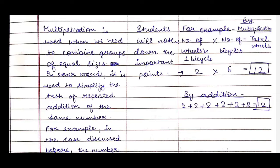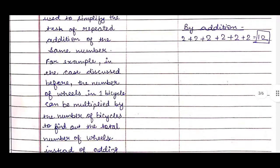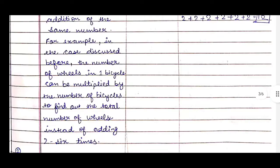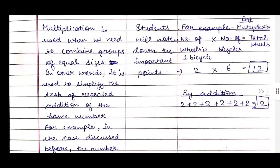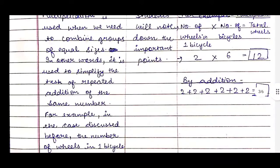We will give them an example, written on the board and explained orally. In the case discussed before, the number of wheels in one bicycle can be multiplied by the number of bicycles to find the total number of wheels, instead of adding two six times. We write: number of wheels in one bicycle is 2, multiplied by number of bicycles, which is 6 — so 2 × 6 = 12. We will also show them the addition method: adding two six times also gives twelve.